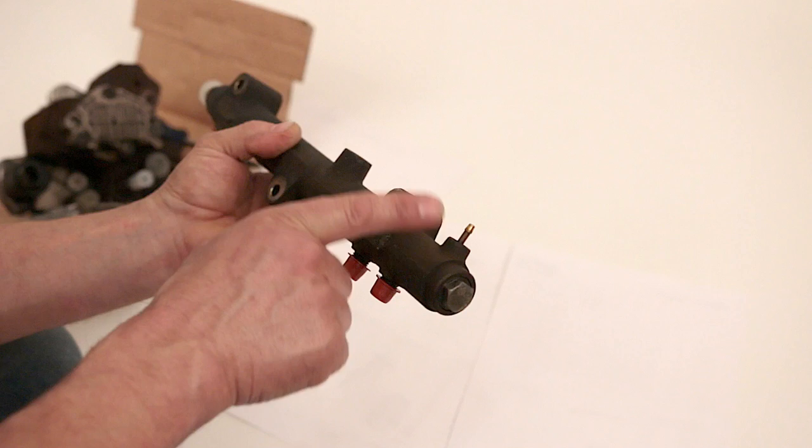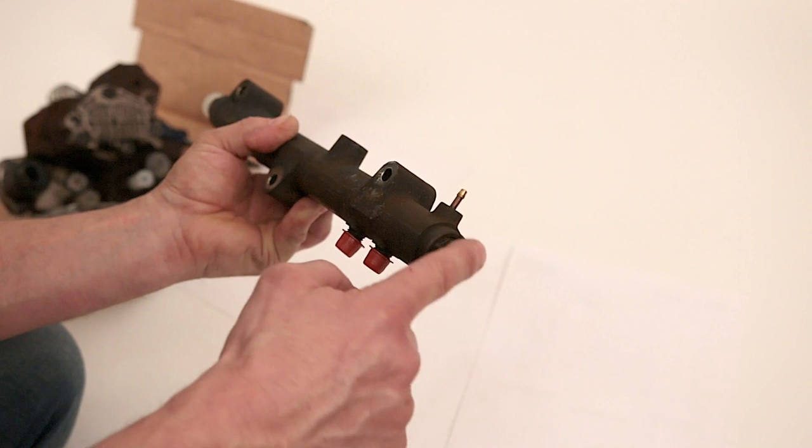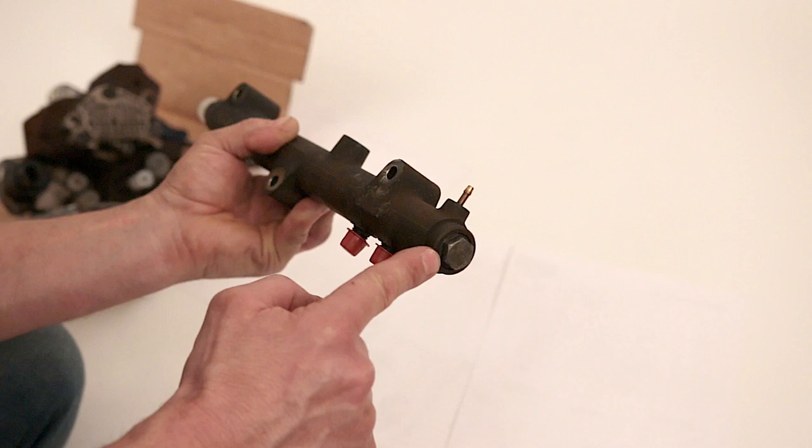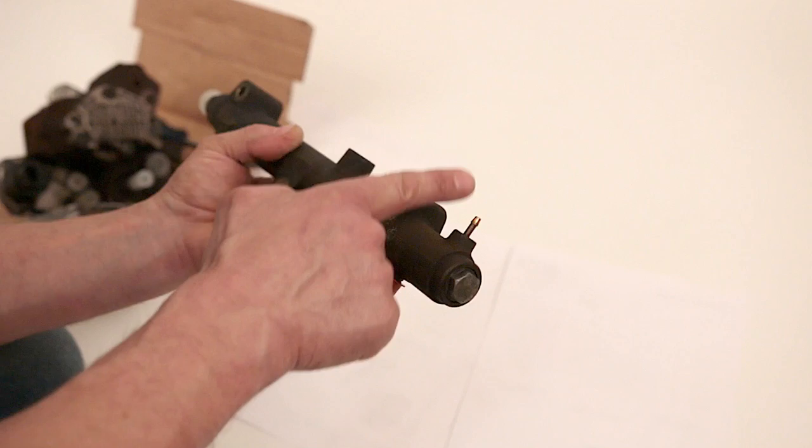Because this nut at the very end here, this is your relief valve. If the pressure was to get too much in this fuel rail, it would release it through this pipe, back to your fuel tank.